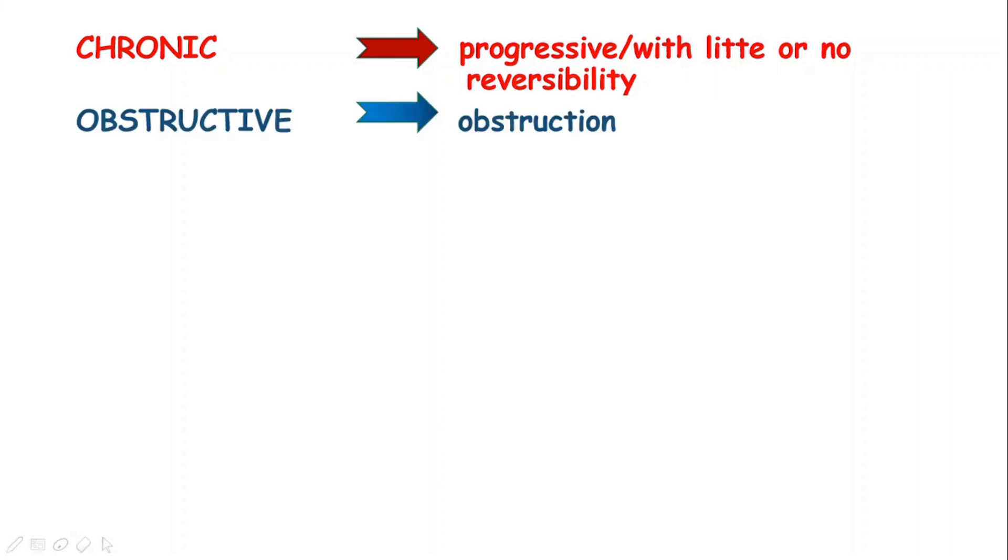It lies in the three terms: chronic, obstructive, and pulmonary. Chronic is anything which is progressive with little or no reversibility. Obstructive shows obstruction and pulmonary stands for airway disease. So it is a progressive obstructive airway disease with little or no reversibility.